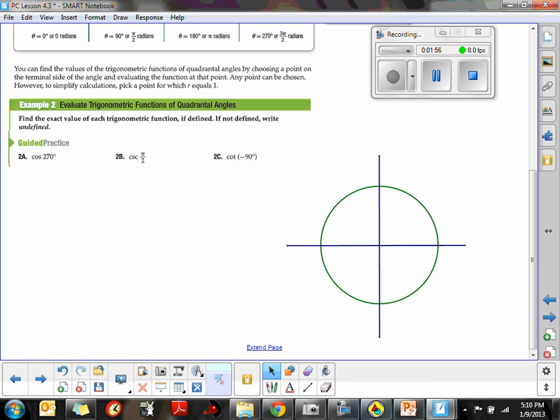And finally, the cotangent of -90. So now we're going to get into some negative angles. We always start on the positive x-axis. When it's negative, we rotate clockwise. 90 degrees puts us on the negative x-axis.